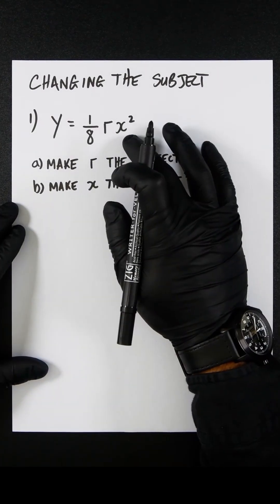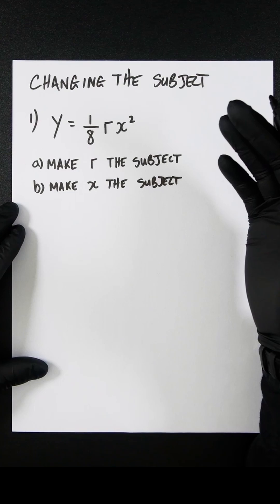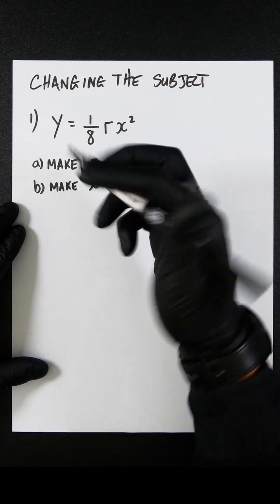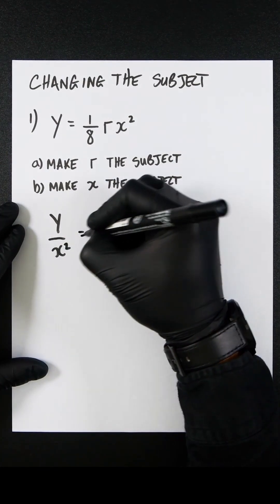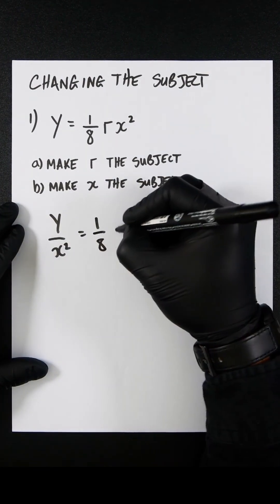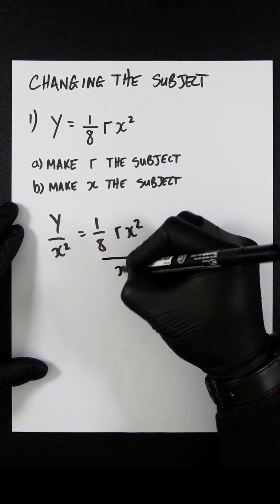So let's first get rid of this x squared term. Whatever we do to the left-hand side, we must do to the right-hand side. So we're going to divide both sides by x squared. So it'll be y over x squared equals an eighth r x squared divided by x squared.